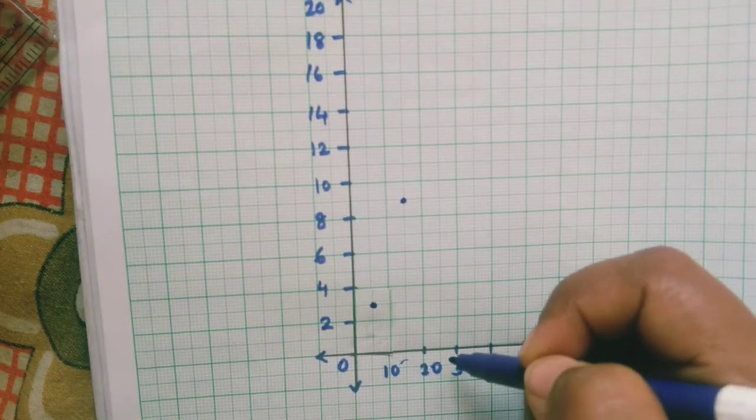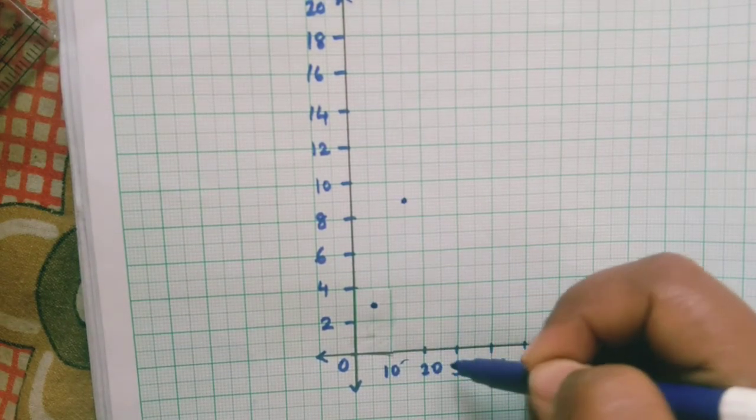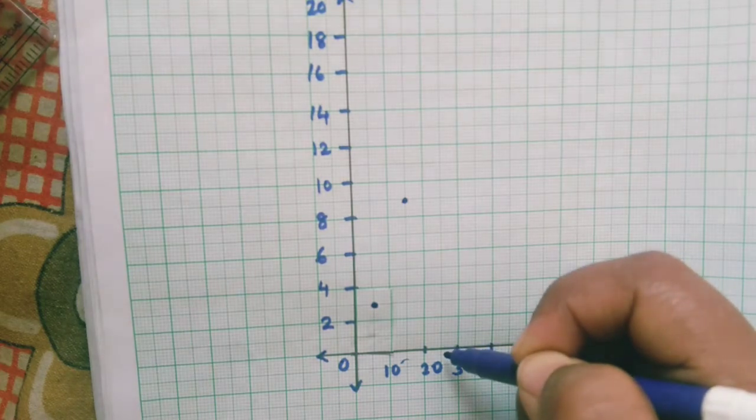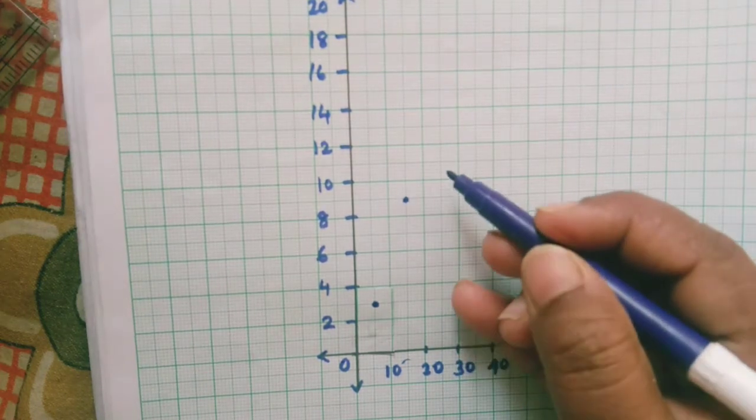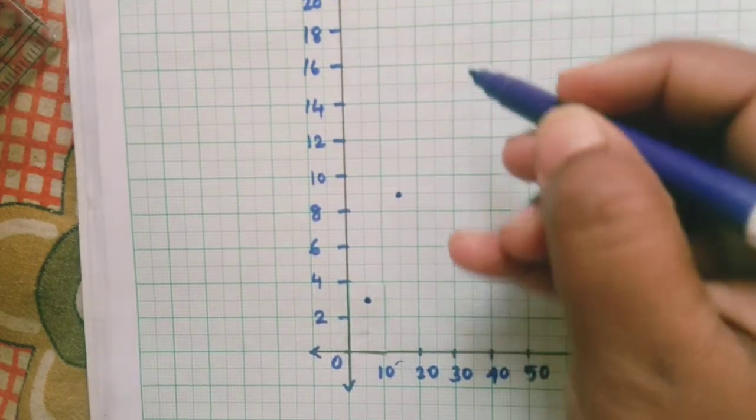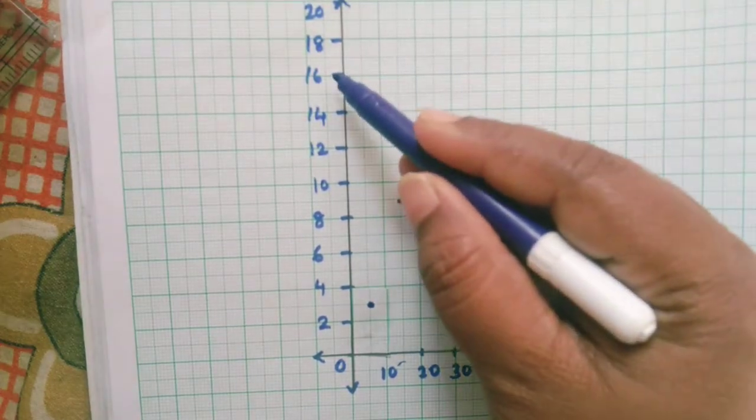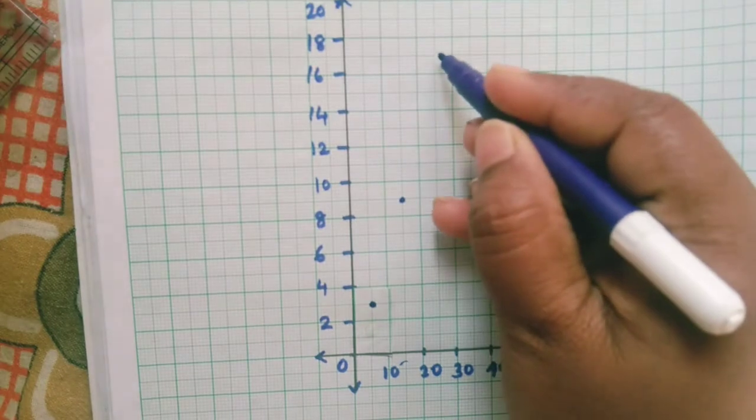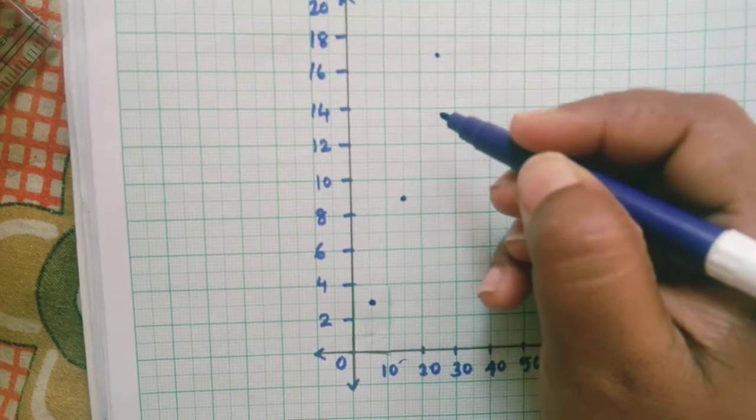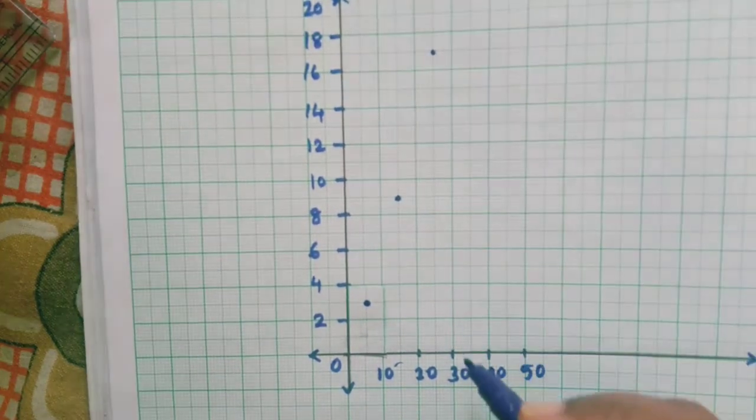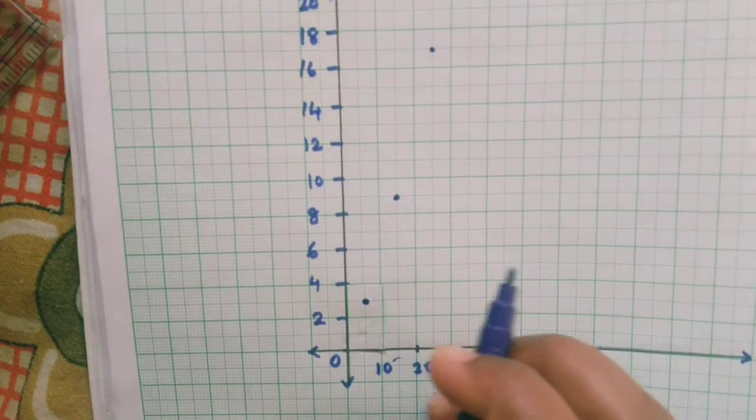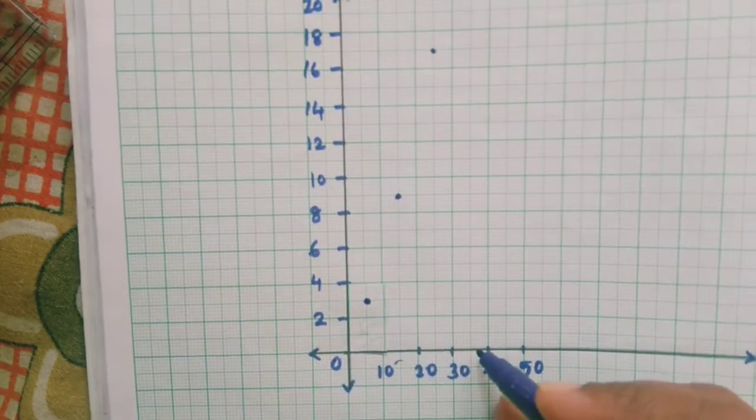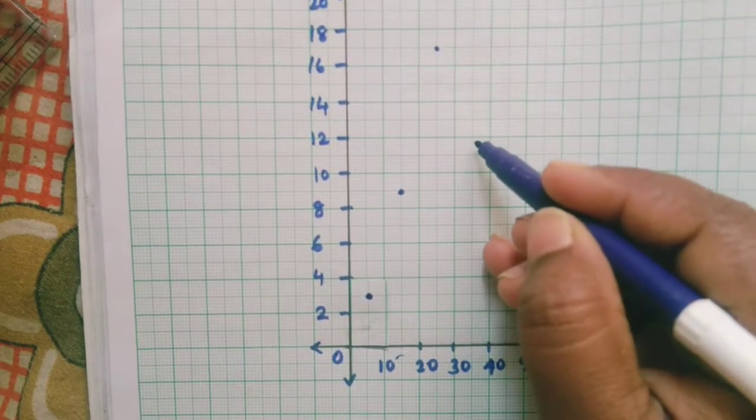And then next one, the class mark is 15. In between 20 and 30 we are going to take that is 15. And here it is 17. Yes. Where will 17 come? 17 will come in between 16 and 18. And then next it is 12. 12 will come here. Here it is 12.